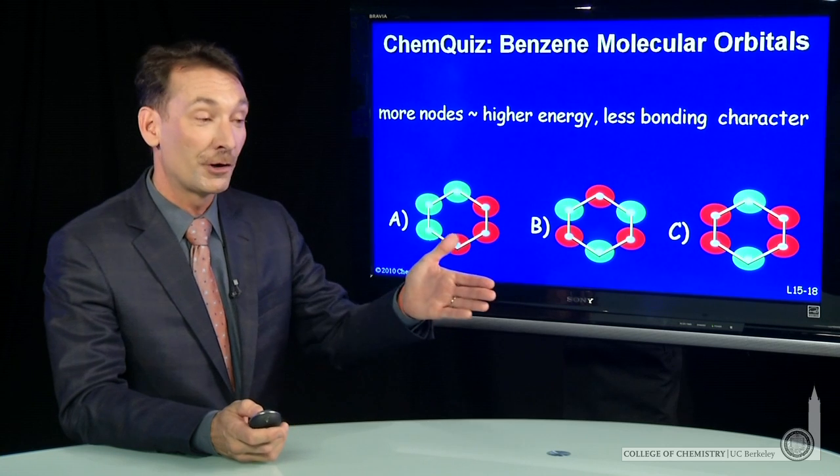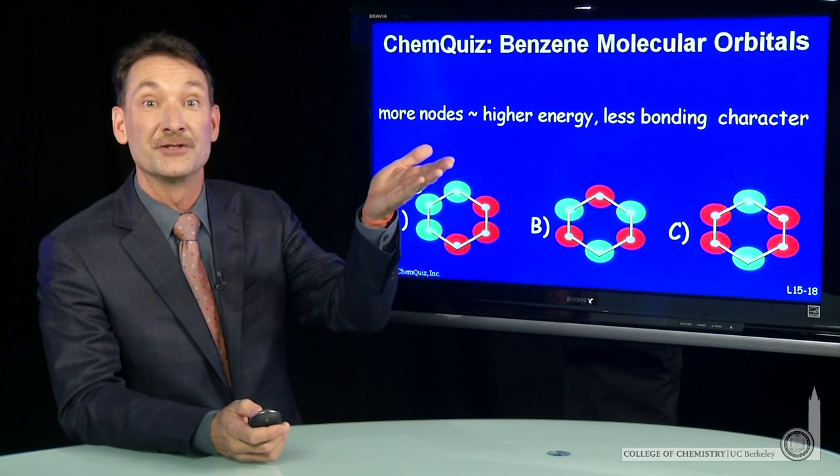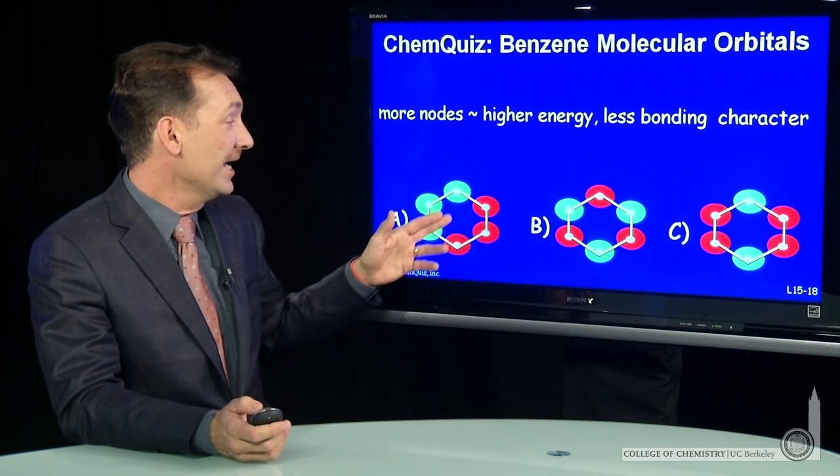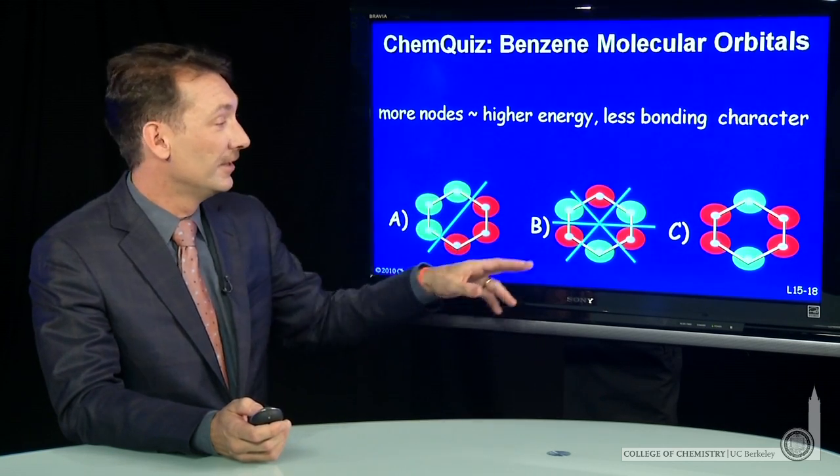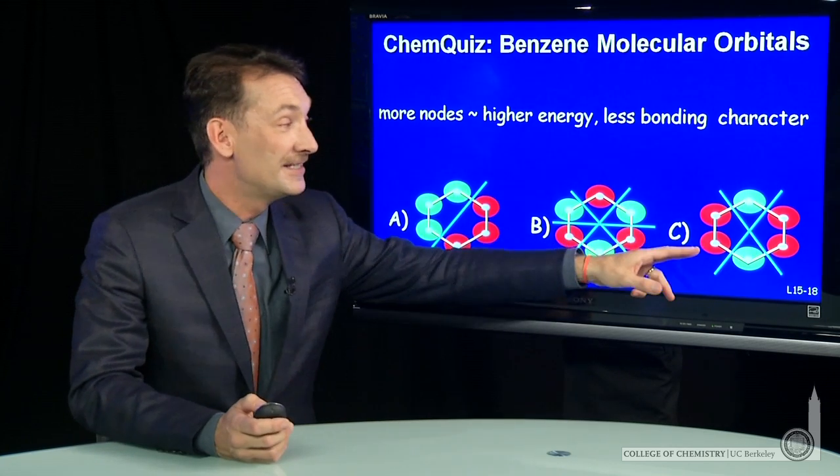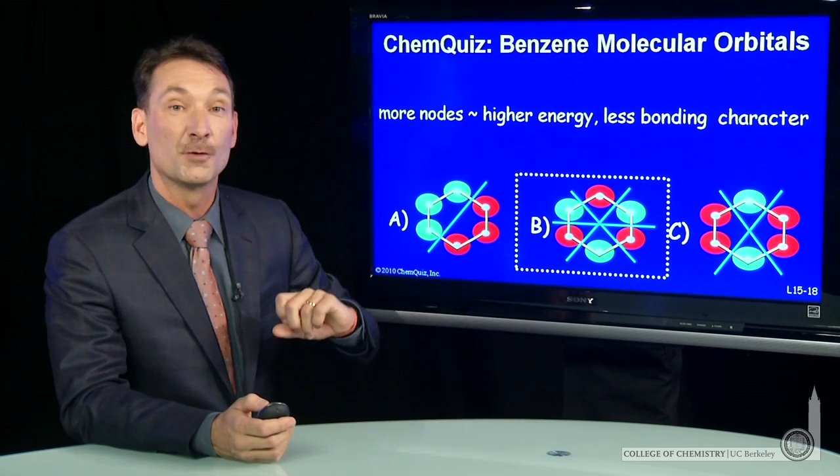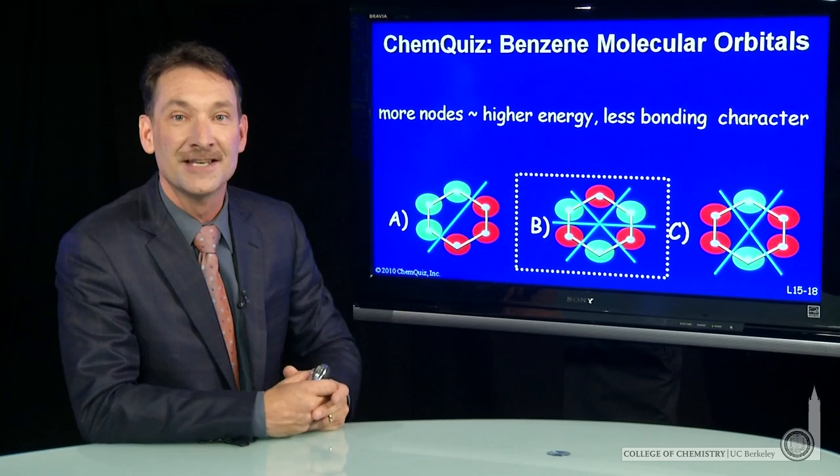Again, we correlate the number of nodes with energy. As the number of nodes increase, the energy goes up. So A has a single node. B has one, two, three nodes. And C, two nodes. So the highest energy orbital is the one with the most nodes, in this case, B.